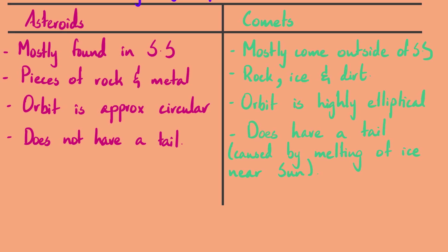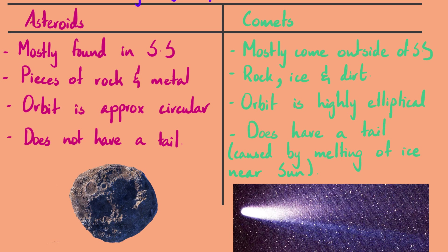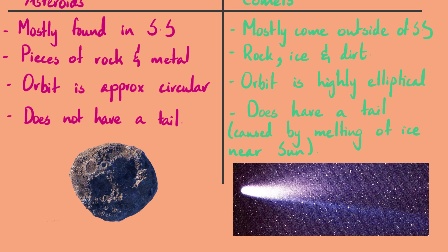If you weren't convinced about how different asteroids and comets are, a picture will convince you. Without the black background, an asteroid looks like an ordinary rock — something you might find under your foot walking down the street. A comet looks much prettier — the glowing tail makes it fascinating. A very popular example is Halley's Comet, which enters the solar system every 76 years. The last time it was here was around 1960 or 1970, so if you live long enough, you'll see it again.